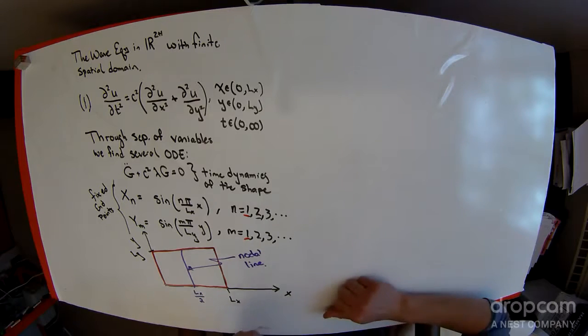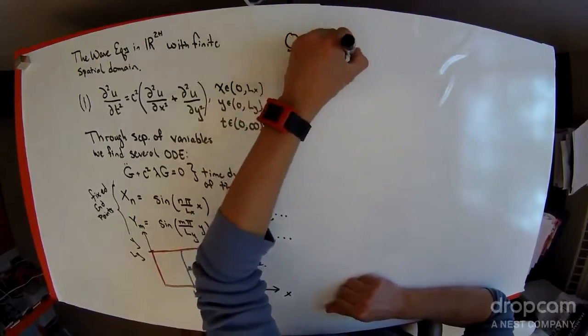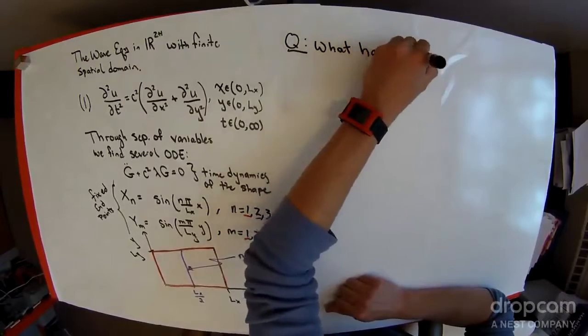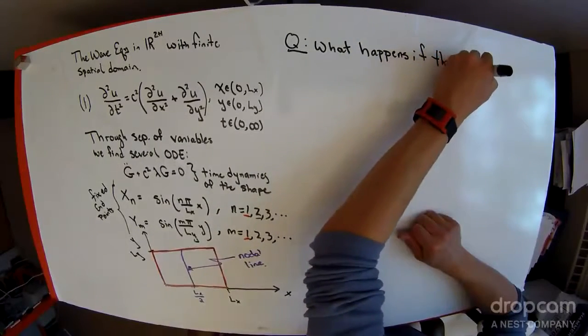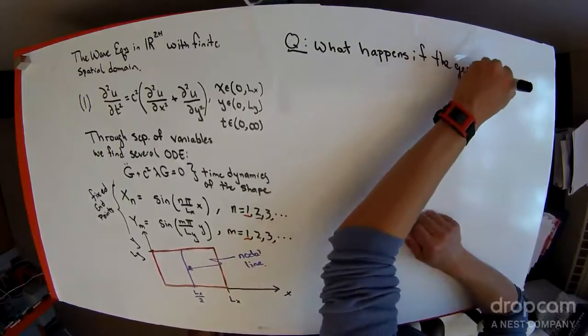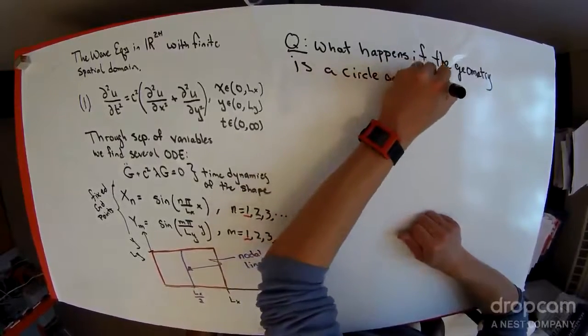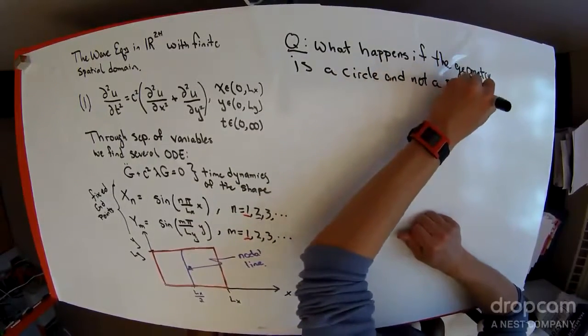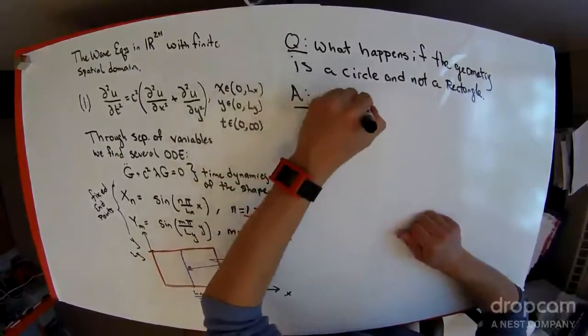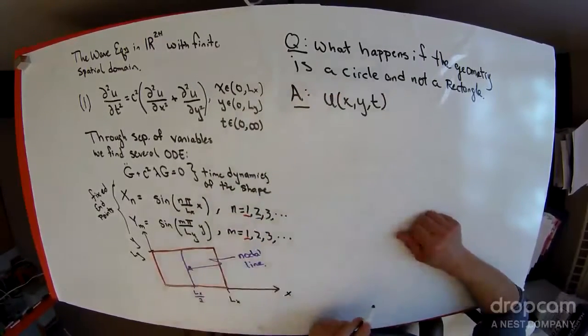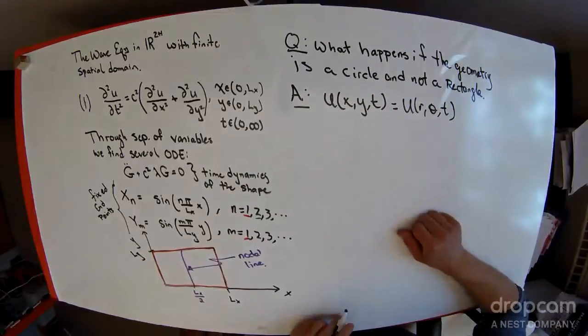What I want to talk about now is what happens if the geometry is a circle and not a rectangle. Well, if u of x of y is the function that we're going to look at, well then it makes sense to look at this function as u as a function of r theta and t, convert it to polar.